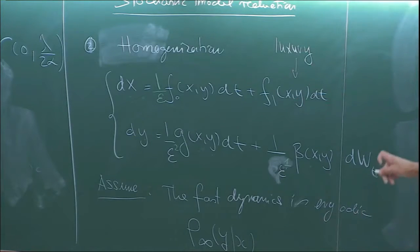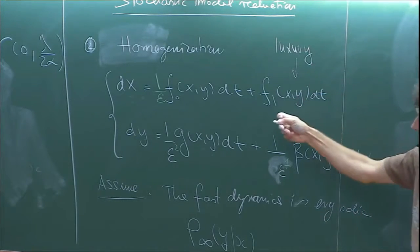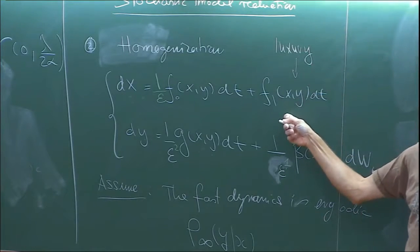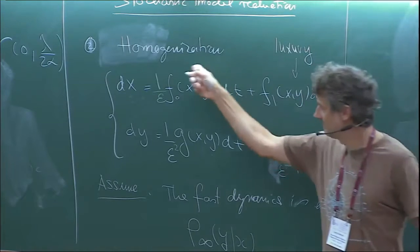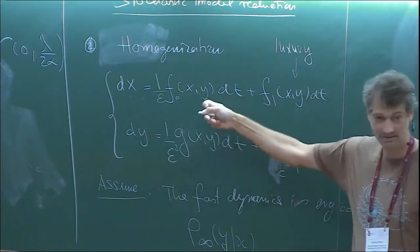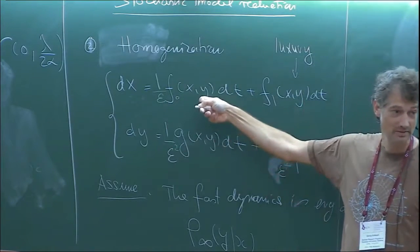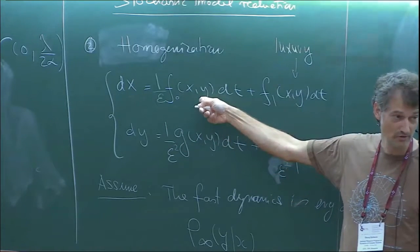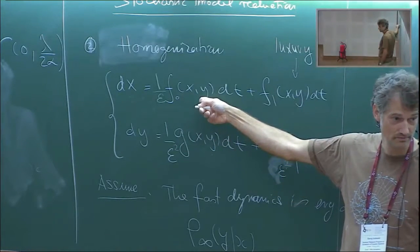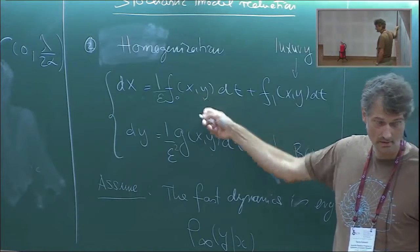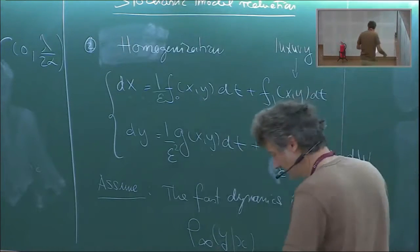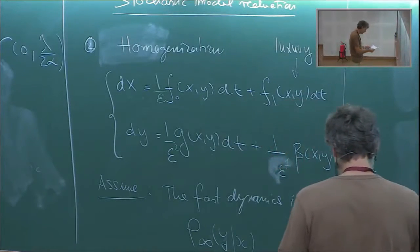F0 will give an average vector field, and the other term will now give the noise contribution.